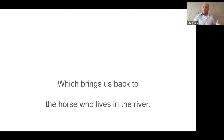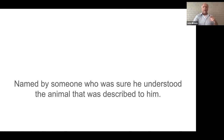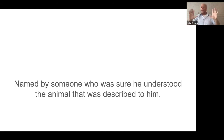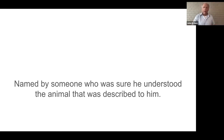Which brings us back to that horse who lives in the river. The horse who lives in the river was named by someone who was absolutely certain that he clearly understood the animal being described to him that he had never seen. Apocryphally, this is the story of the Greek explorers who came back and were describing previously unseen animals to their leaders and rulers — which is why we have all kinds of fantastic beasts in some of the old maps, and those beasts entered into mythology.